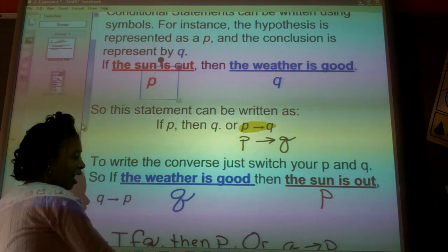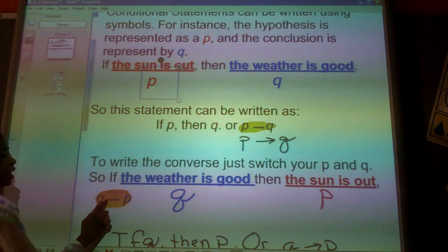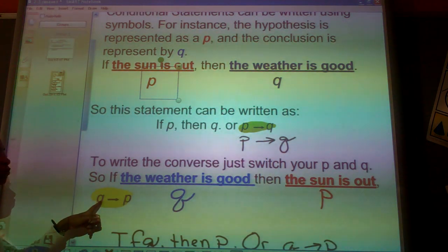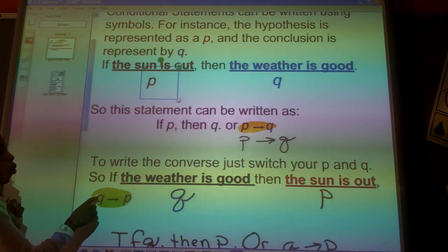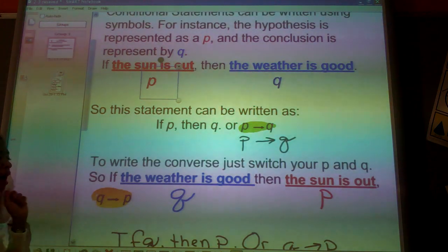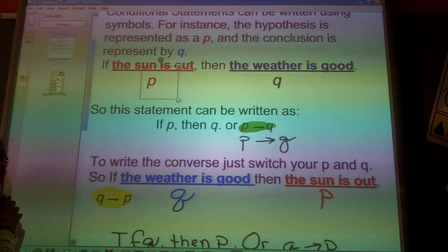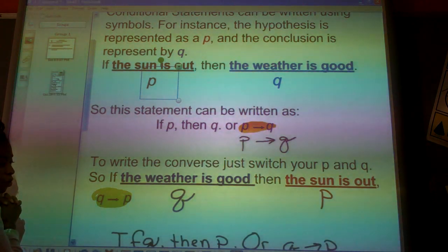So, to write that one, I'm going to simply come in here and say Q, arrowhead, P. And that means the conclusion first, then the hypothesis, which signifies that this is the converse because we write the conclusion, then the hypothesis. So, if you ever see me write Q, arrowhead, P, that means I want you to write the converse.